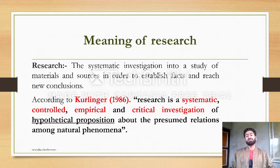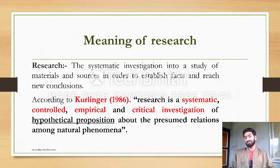Research is systematic — systematic means based on logic. Controlled — controlled means the observer, investigator, or researcher has control on their subject, on the study being conducted. Research is empirical — empirical means which can be verified and observed. And critical investigation — critical means based on the question 'why,' or we can say critically, which means descriptive in nature and analytically.